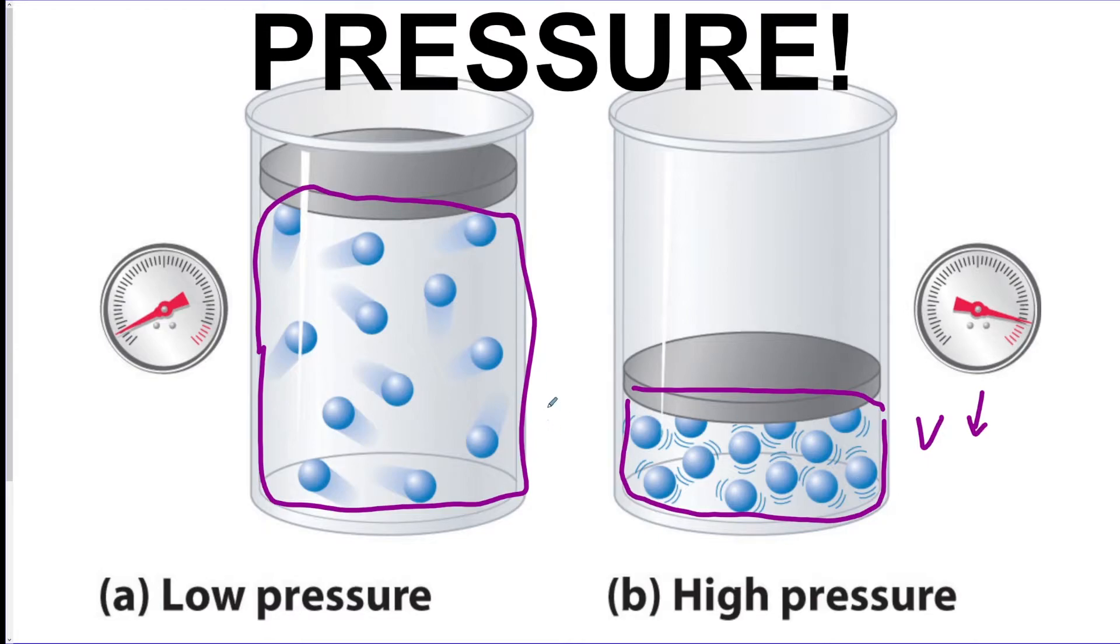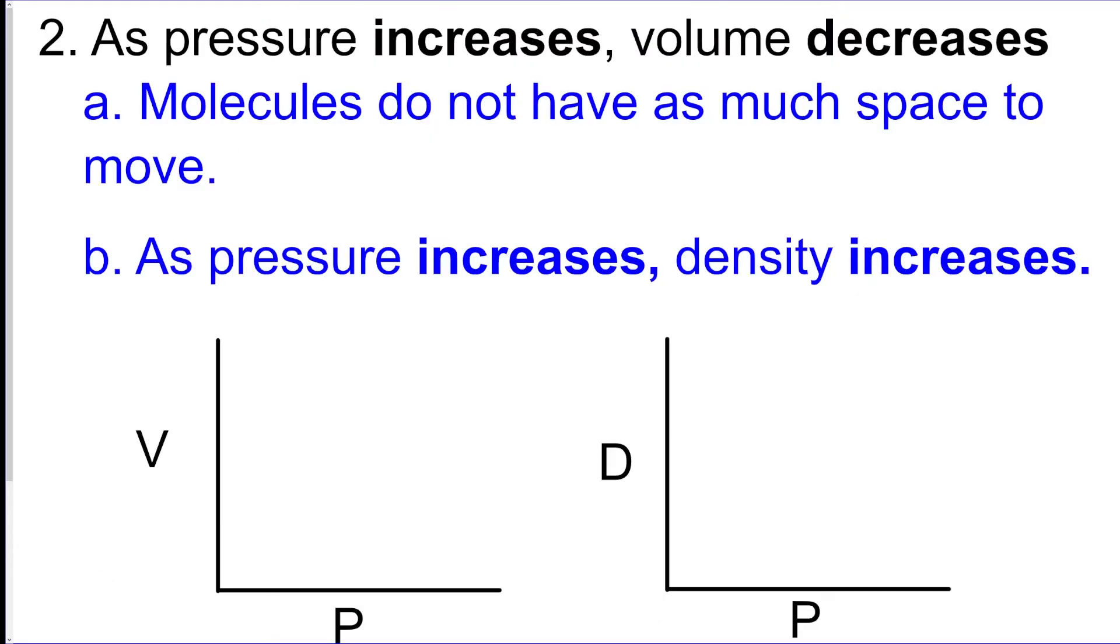But when we crush it, now we're creating less volume, so pressure goes up, volume goes down. And now if you think density is how packed, look, they had room on the left one and now they're way more packed, so density went up. So if we graph these, pressure goes up, volume drops, but density goes up because they're more packed.